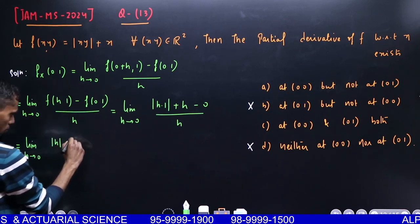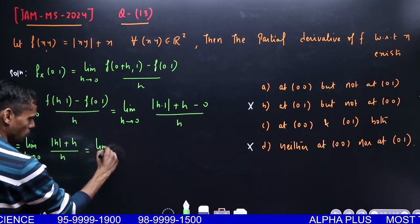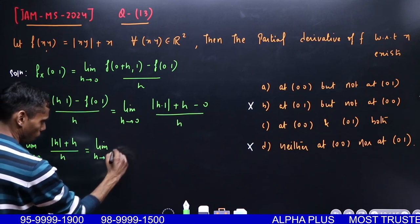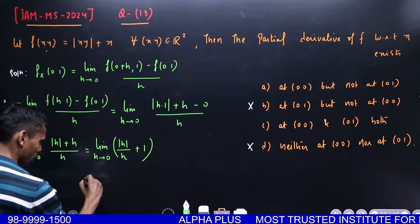Putting x = 0, y = 1 gives 0. So this becomes [|h+1|+h]/h. You can write this separately.